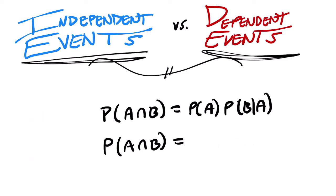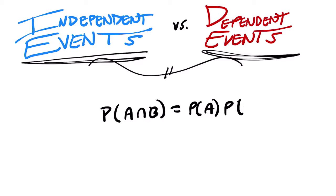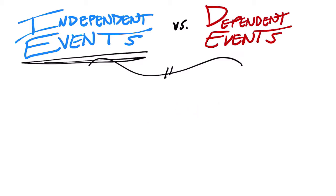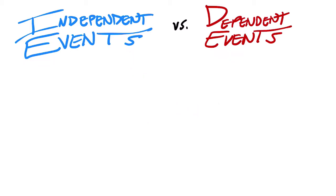Let's clear some things off here to get a sense of what's going on. When I'm trying to understand a concept, I have to draw a picture — that's my approach. So for independent events, let's draw two buckets.